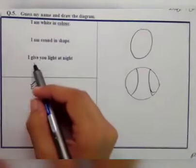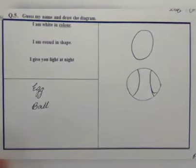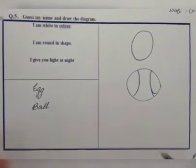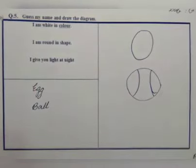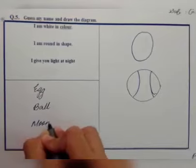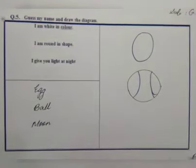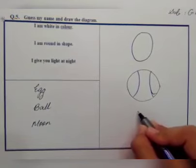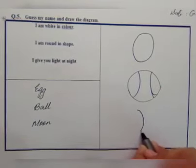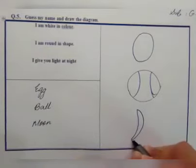And the last one is I give you light at night. So think about which thing gives us light. So here I can write the name of moon because moon can give us light at night. And here we can draw the picture of moon like this.